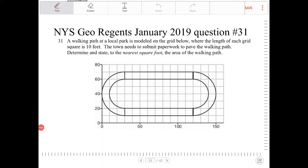A walking path at a local park is modeled on a grid below, where the length of each grid square is 10 feet. The town needs to submit paperwork to pave the walking path. Determine and state to the nearest square foot the area of the walking path.